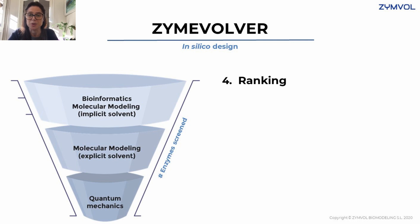The next step is ranking. Once we have these millions of enzyme variants created, we need to select the best ones. For this, we have a funnel that includes an initial screening with lower-level computational methods, like bioinformatics and molecular modeling using implicit solvent. Then we start selecting the best hundreds of thousands of variants and take them to higher levels of theory, which include molecular modeling with explicit solvent through to quantum mechanics.